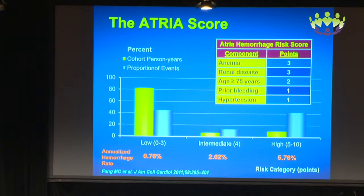There are rivals to the HAS-BLED score, and perhaps the more popular again is the ATRIA score from North America. The big differences are the presence of anemia and renal disease, with high scores given to each. With a high score, the bleeding rate is about 6% per annum — very similar to HAS-BLED scores. They are very much equivalent, but the data required for the ATRIA score are often not available in large registries.